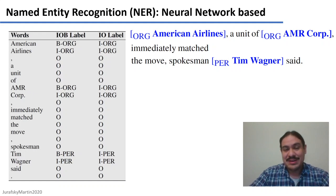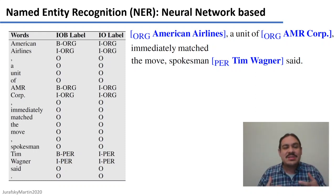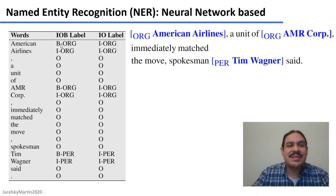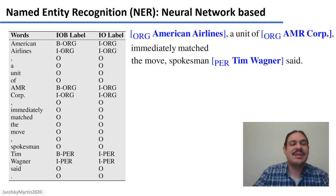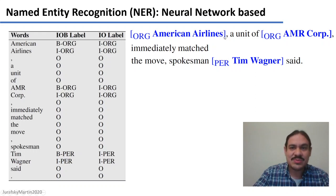Once you have enough of a training set, you can train something using a neural network or a classifier. Systems usually use the IOB tagging system that we saw for chunking, where you tag things that are at the beginning of a named entity (B), an intermediate part (I), or outside a named entity (O). For example, in 'American Airlines, a unit of AMR, immediately matched the move': 'American' would be B-ORG (beginning of an organization named entity), 'Airlines' would be I-ORG (intermediate). By the transition from I to O, we know where this named entity ends.